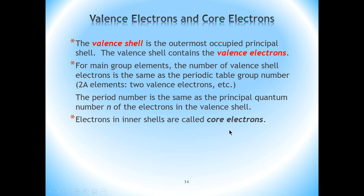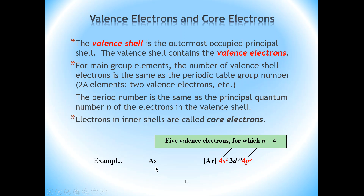All other electrons are located in the core part of the electron configuration, and they are called core electrons — those electrons that are not in the valence shell but are in the inner shells. For example, looking at the electronic configuration of arsenic, the valence electrons are the two electrons in the 4s sublevel and the three electrons in the 4p sublevel, because those sublevels are in the highest energy level, the fourth energy level. Therefore, arsenic has five valence electrons and is located in group 5A.